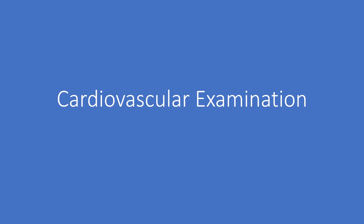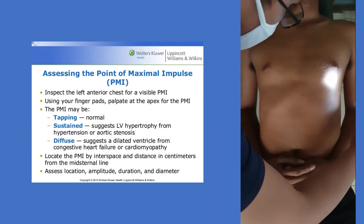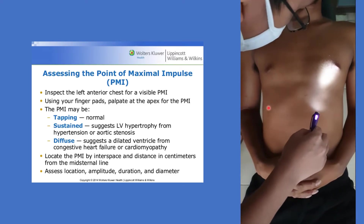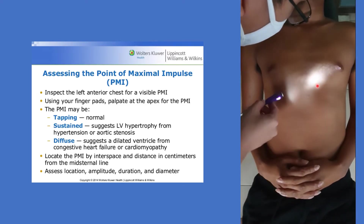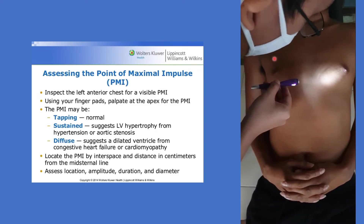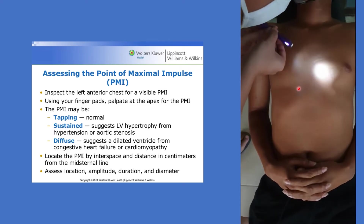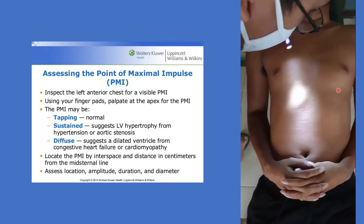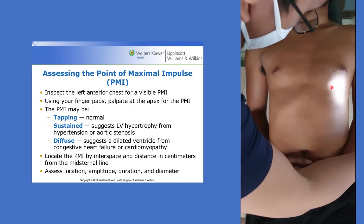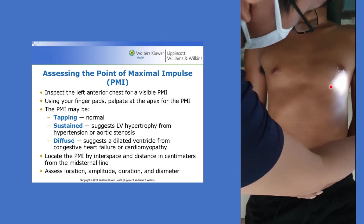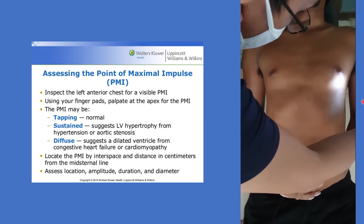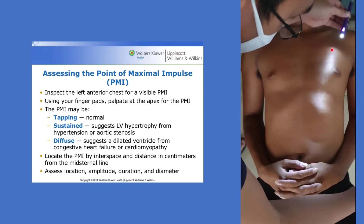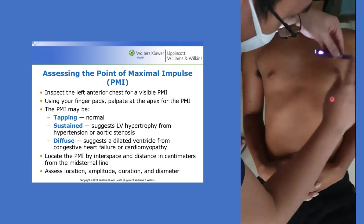Cardiovascular Examination. When locating the PMI or the point of maximal impulse, carefully inspect the anterior chest by shining a tangential light across the chest wall to appreciate the apex. Take note of how the pen light is positioned — it should be tangential or oblique. Your aim is to produce shadows.